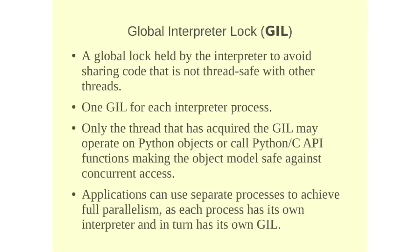And only one thread that has acquired the GIL can execute Python code and can access the Python objects or call C functions. Therefore, it's implicitly making the interpreter thread safe against concurrent access.